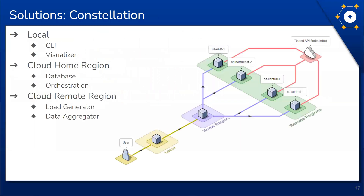Thanks Steven. First I want to give you a quick overview of the Constellation infrastructure. The framework is run from the command line given a couple of user-generated setup files. Constellation then uses this information to deploy several cloud components using AWS services. These components are split into home and remote regions that the user identifies — the home region is where they want to store the data, and the remote regions are where they want load to come from during their load test.